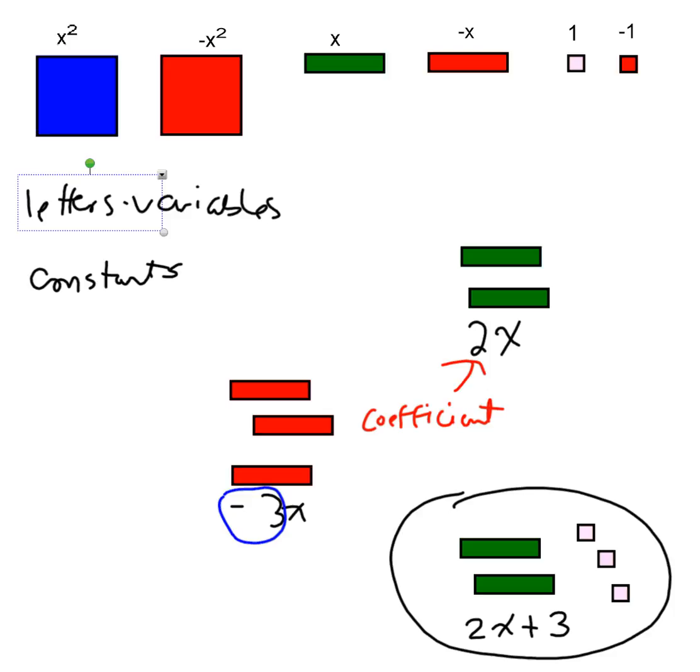These are called terms. For example, the 2x, this is a term, and the 3 is also a term. They are not the same. They don't both have x's, or they don't both have x squareds. They're different. So they are not like terms. They are not alike.